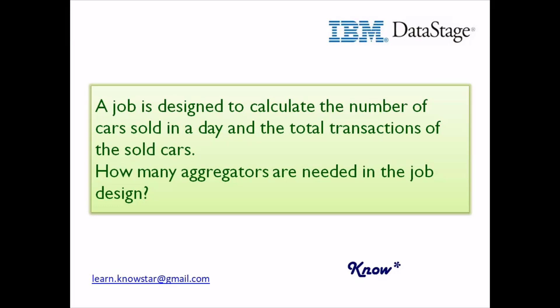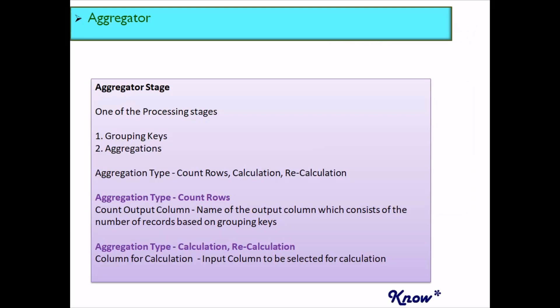The grouping key is the day or date. We need to find the count of transactions per day and the sum of cars sold per day. An Aggregator can count rows, perform calculations, and recalculations — but the count rows function and the calculation/recalculation functions are mutually exclusive. You can either use the Aggregator to count rows or to perform calculations, not both. Therefore, in this scenario you need two separate Aggregators: one to count the number of transactions and another to sum the cars sold.